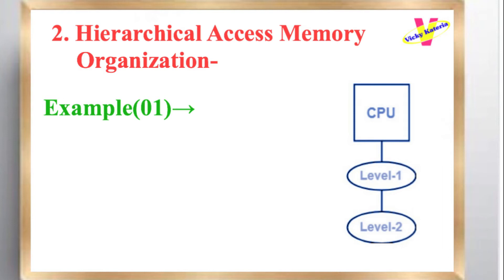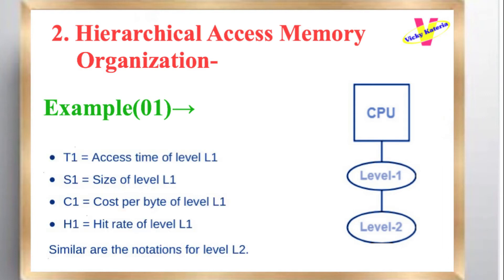Example 1: Consider the following hierarchical access memory organization. Here, two levels of memory are connected to the CPU in a hierarchical fashion. Let T1 = access time of level L1, S1 = size of level L1, C1 = cost per byte of level L1, H1 = hit rate of level L1. Similar are the notations for level L2.